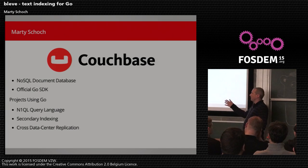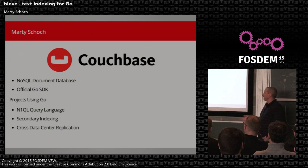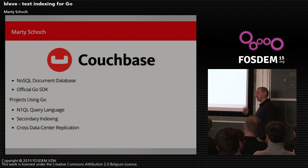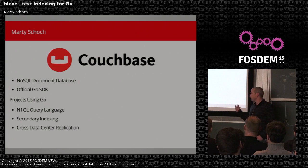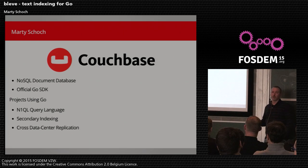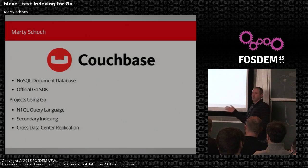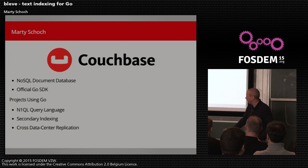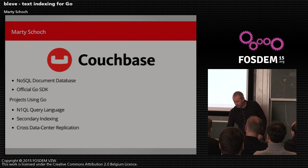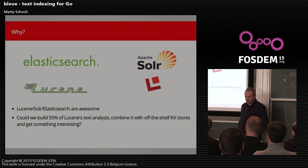To give you a sense of that, the N1QL query language, secondary indexing, and cross datacenter replication are three of the biggest features in Couchbase, and those are all either being written in Go from scratch or being rewritten in Go. So Go is a big part of the future of Couchbase. But if you want to ask me any questions, just grab me afterwards.